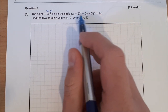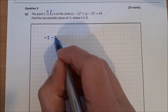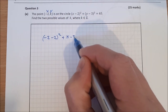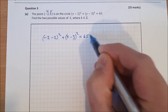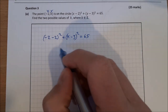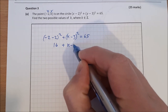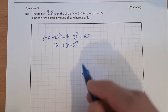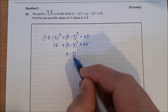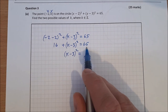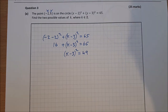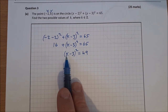Substituting x = −2: (−2 − 2)² + (k − 3)² = 65. So −2 − 2 is −4, and −4 squared is 16. So 16 + (k − 3)² = 65. Taking 16 from both sides gives (k − 3)² = 49.